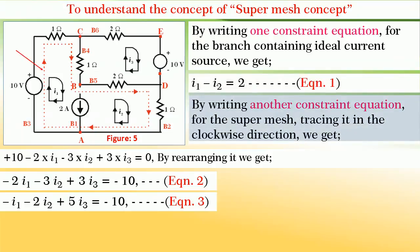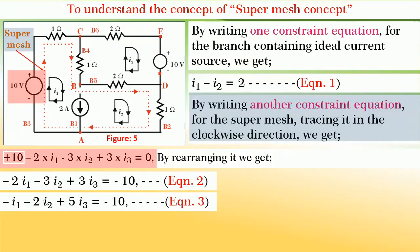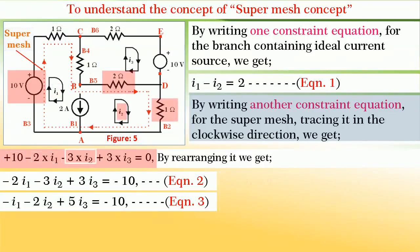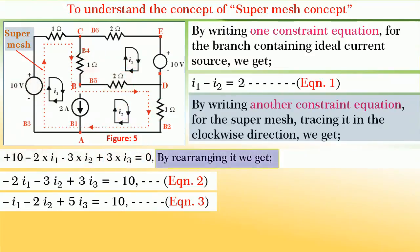By writing another constraint equation for the super mesh, tracing it in the clockwise direction, we get plus 10 minus 2I1 minus 3I2 plus 3I3 equals 0. By rearranging it, we get minus 2I1 minus 3I3 equals minus 10. Let it be equation 2.